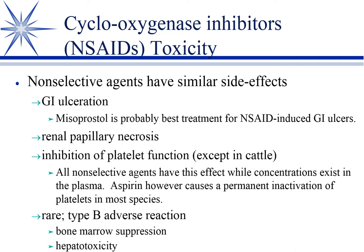Prostaglandins are not necessary for normal renal blood flow, but they are for compensatory renal blood flow. So if you have a dehydrated, hypovolemic, or hypotensive animal that's trying to maintain his GFR by local prostaglandin release, and you block that, you can get ischemic injury to the kidney and renal papillary necrosis.